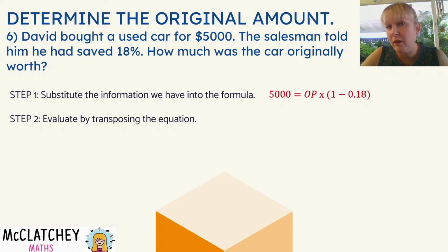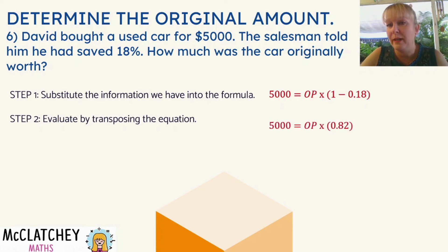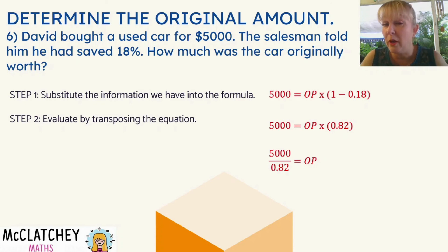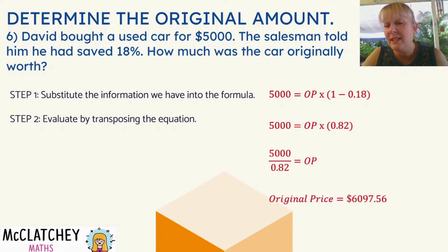Now we're going to transpose our equation — we're going to move numbers around to make the original price the subject. First, simplify what's in the brackets: 1 − 0.18 is 0.82. So $5,000 equals original price times 0.82. The original price is multiplied by 0.82, so to get the original price by itself, I've got to do the opposite — which is divide. $5,000 divided by 0.82 gives me my original price: the original price was $6,097.56. David saved a fair bit!